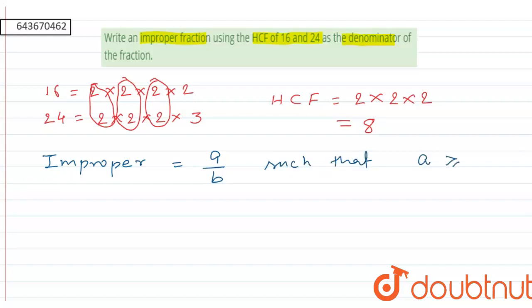a is greater than or equal to b, then the fraction a upon b is called an improper fraction.